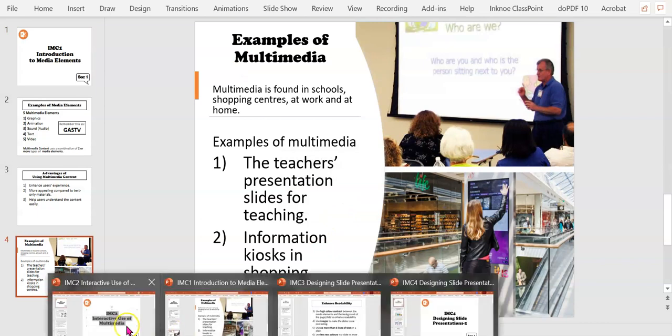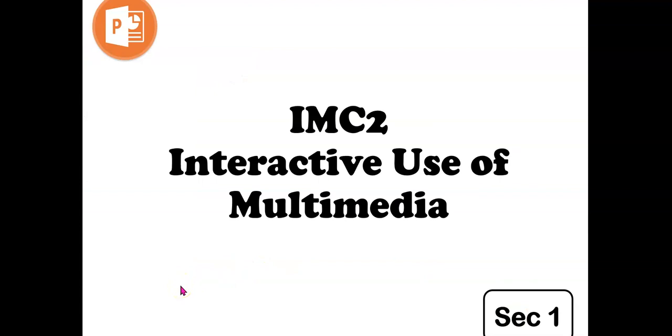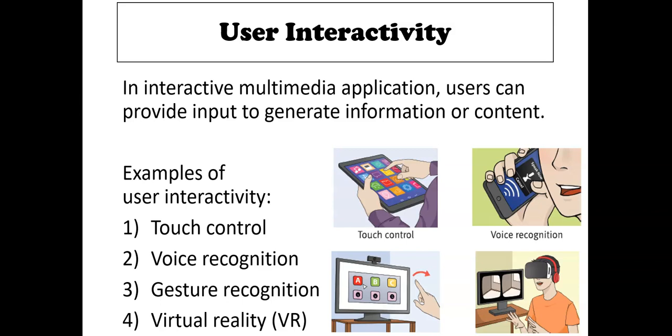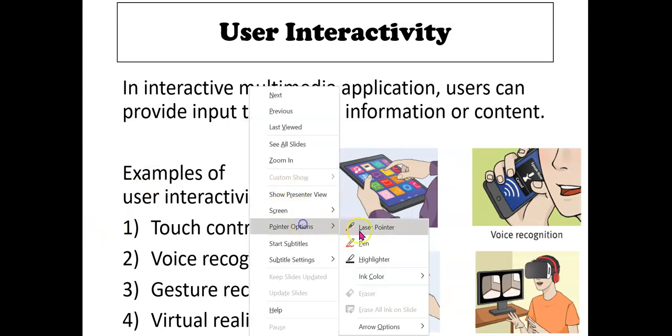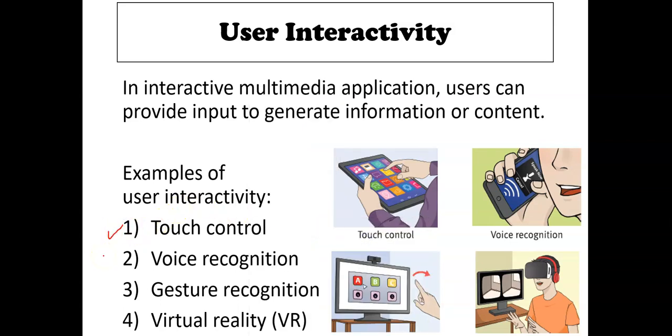I'll now go through chapter two. Chapter two talks a bit more about interactive use of multimedia. When it comes to interactivity for users, how can they communicate with the devices? There's always the touchscreen, so touch control. Using our voice to activate voice recognition. Gesture recognition is like those games, Wii game set that you ever encountered before, or even VR headsets where you can just use your fingers and you can point and VR. As you can see, VR is where the student is wearing a headset. These are the four ways where we can interact with the device.